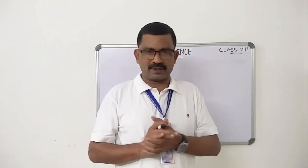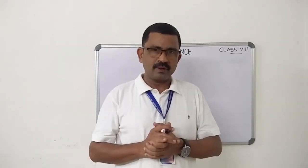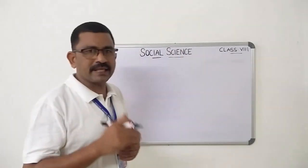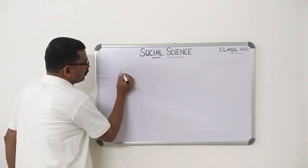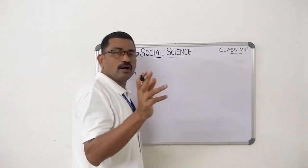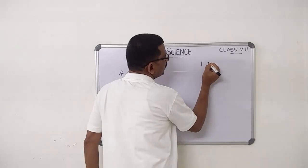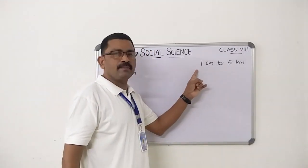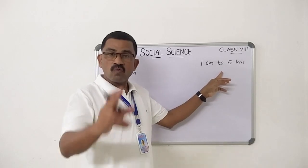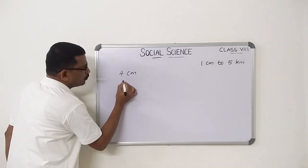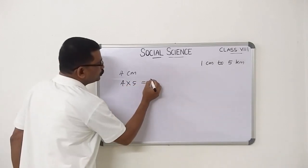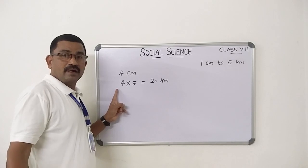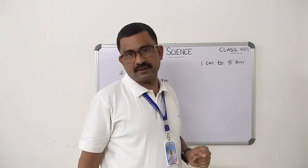Children, now we got the measurement on the map. Let's discuss the measurement on the earth. For example, we got the measure 4 cm on the map. The scale of the map is 1 cm to 5 km. We already learned that 1 cm on the map equals 5 km on the earth. So 4 into 5 is equal to 20 km. So on the map, 4 cm on the earth is 20 km. Got it?